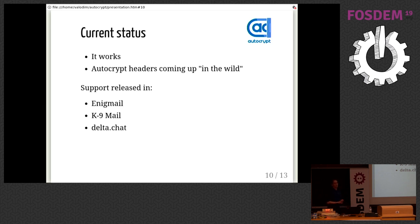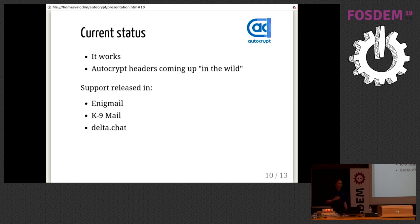Just quickly about where we are. We started this in December 2016. We released the first version of our spec, the Level 1 spec, in December 2017. Since then, a bit more than a year has passed, and I'm happy to say that Autocrypt headers do come up in the wild. I have mostly stopped doing manual key management at all. In my OpenKeychain I see a bunch of keys just popping up from Autocrypt headers that people send, which probably are in the majority Enigmail users, because Enigmail supports this since March of last year.